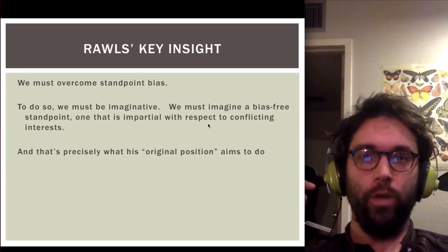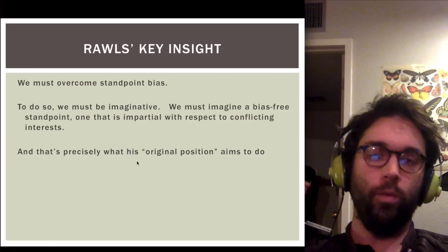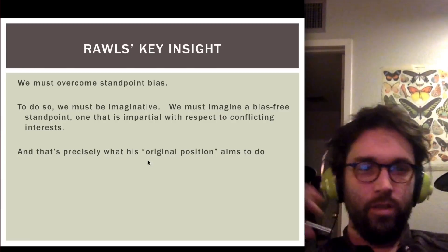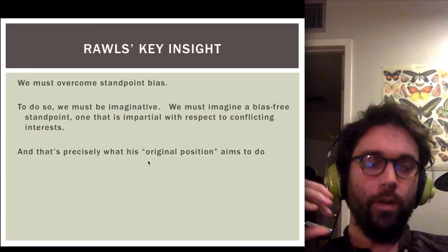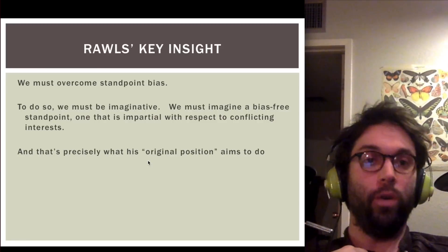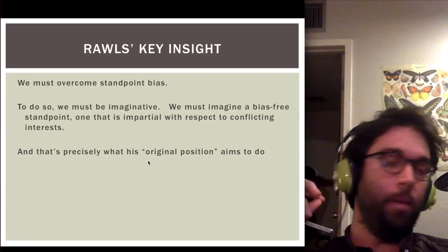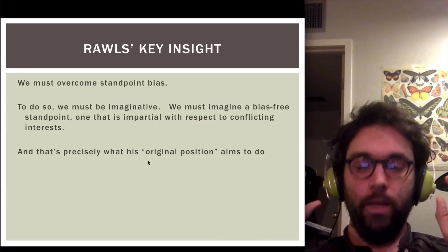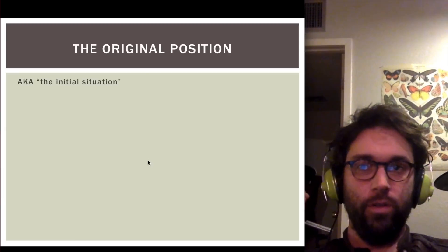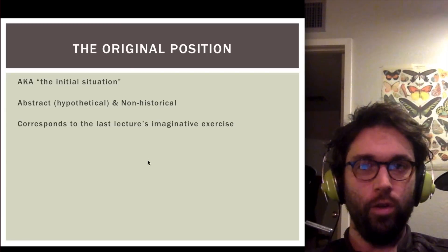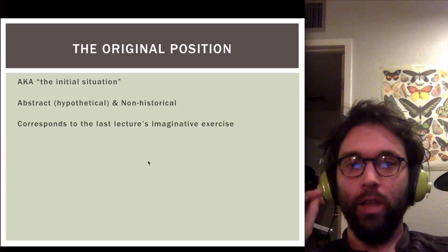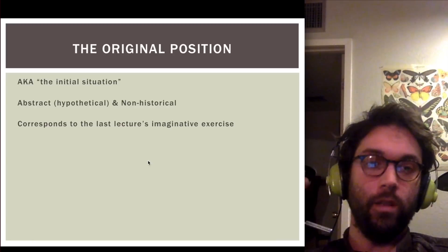This imaginative, bias-free standpoint is exactly what Rawls's original position aims to do. The original position is a device Rawls uses to overcome standpoint bias — which must be overcome if we're going to reach the correct principles of justice, as opposed to principles that would benefit whoever is advancing them. It corresponds more or less directly to the elaborate imaginative exercise we introduced in the last lecture.